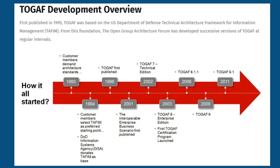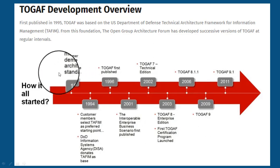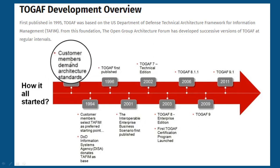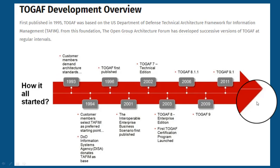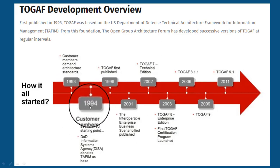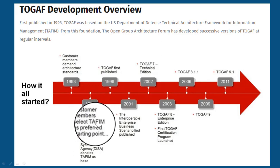From this foundation, the Open Group Architecture Forum has developed successive versions of TOGAF at regular intervals. In this diagram, you can see the members' demand for the architecture started during 1993. In 1994, the Open Group decided to take TAFIM as the preferred starting point.